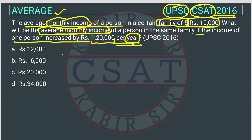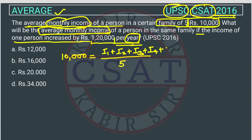So first of all, what have they given? They have given the average of 5 members. So using the formula of average, the total income is I1 + I2 + I3 + I4 + I5 divided by 5 equals 10,000. So the total income comes out to 50,000.